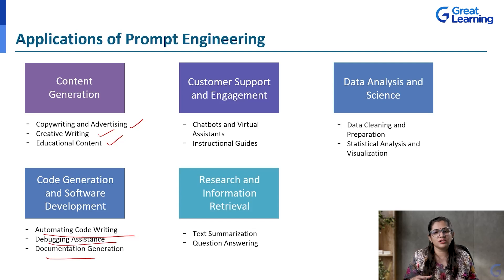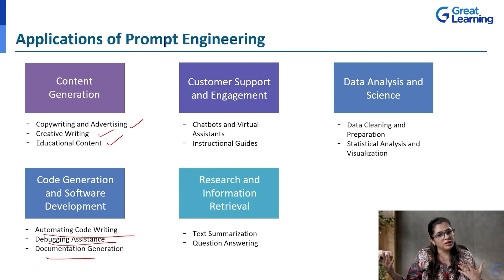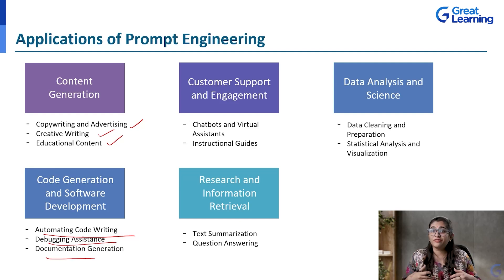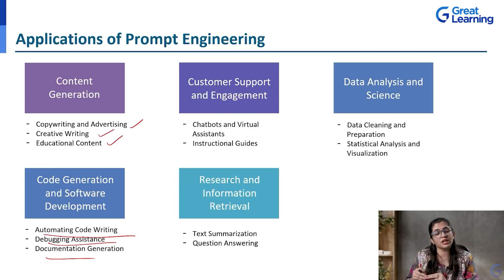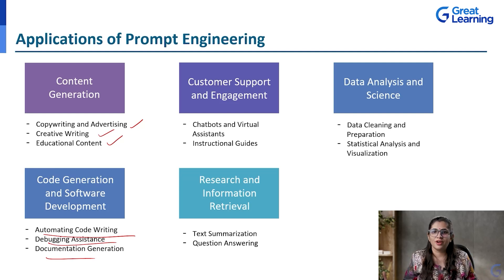Next is research and information retrieval — for example, text summarization, question answering, and more. You can give links as context and tell the model these are specific research papers done in this field. Based on this, give me your hypothesis and what next can be done.